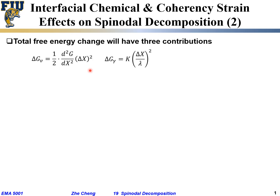In addition to this driving force term, there will be two barrier terms. The first is the chemical term, delta g gamma, which equals a constant k times how much the concentration modulation changes, divided by the wavelength lambda, squared. This term will always be positive. The driving force term will be negative if the second derivative of Gibbs free energy with respect to concentration is negative, while the delta g gamma term is always positive.